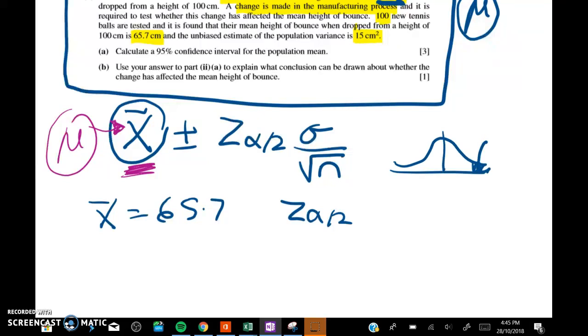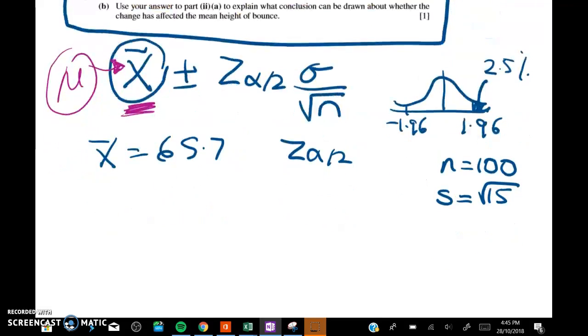Which means I want 2.5 percent in each tail, so that value is going to be 1.96, plus or minus 1.96. n is 100 and s, my estimate of σ, is going to be the square root of 15. My confidence interval is pretty easy to do. It's just that you've got to have x̄ in the middle of it, not some old value of the mean.